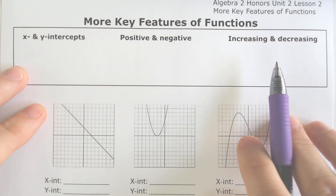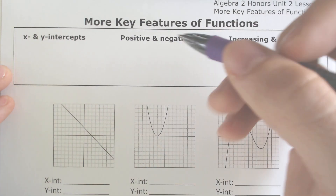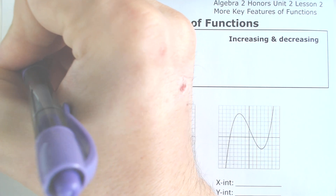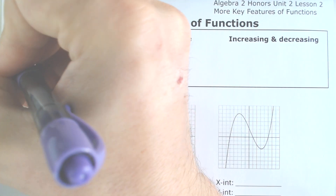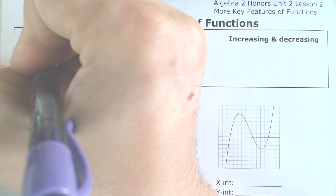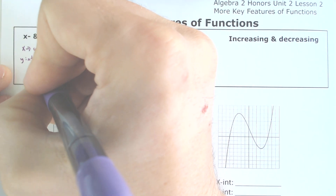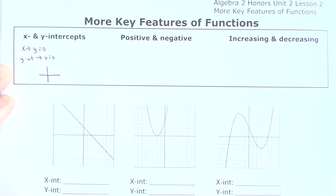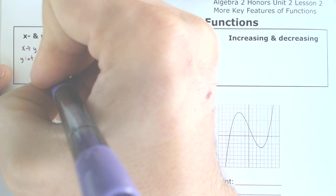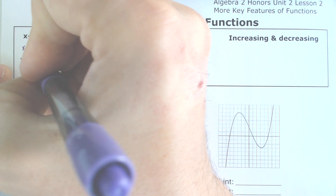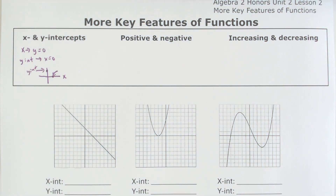The first thing I want to cover is when x and y-intercepts are occurring. The x-intercept is when y is equal to 0, and the y-intercept would be when x is equal to 0. Another way to think about it: the x-intercept is when the graph crosses the x-axis, and the y-intercept is when it crosses the y-axis.